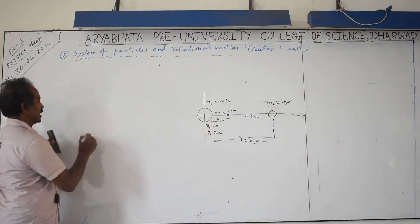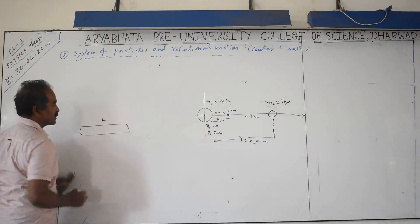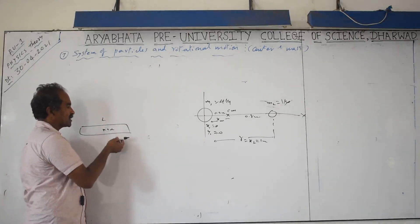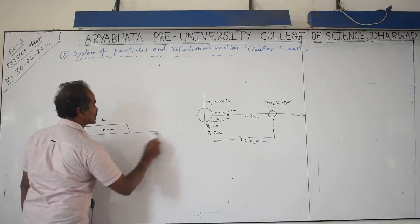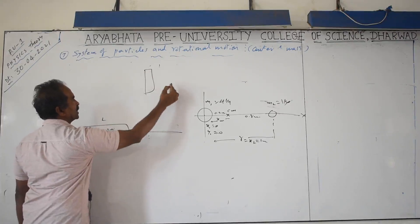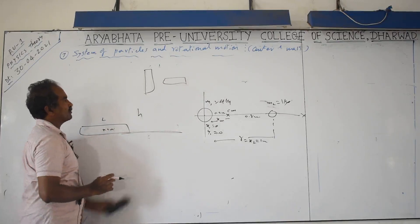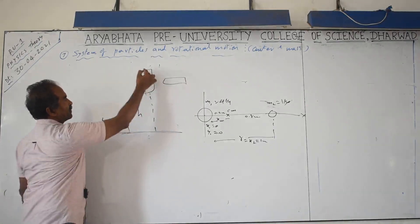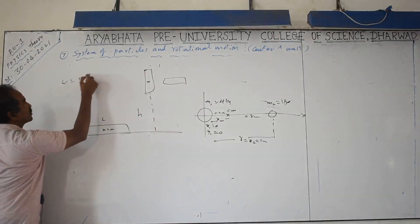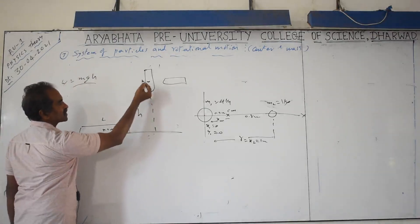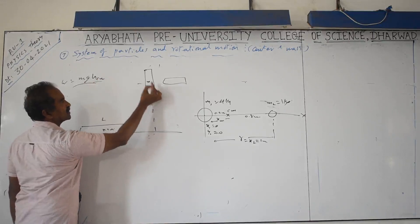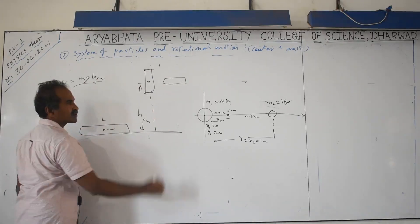Consider an object of length L. The center of mass is located at its geometric center. When lifting an object vertically or horizontally, you must consider the center of mass only. Different points of the object — top end and bottom end — are lifted by different heights. The work done = mgh, where h is the height of the center of mass, not the bottom or top end. Lifting any object is equivalent to lifting its center of mass.